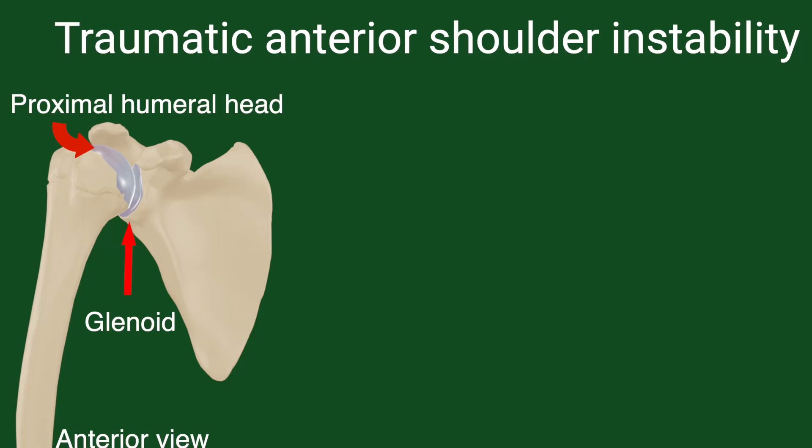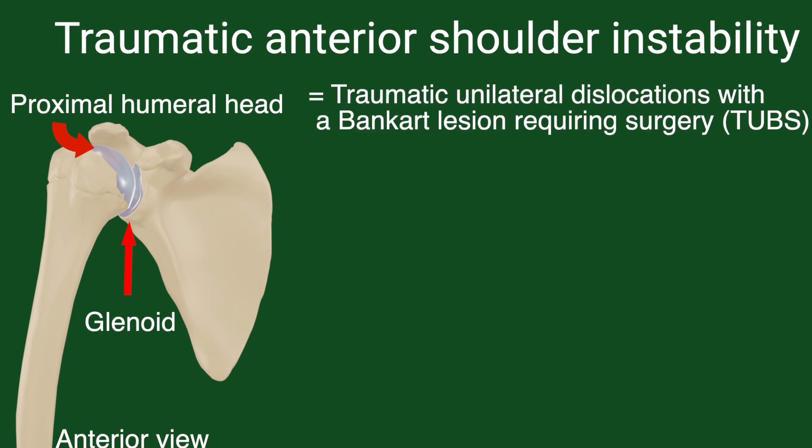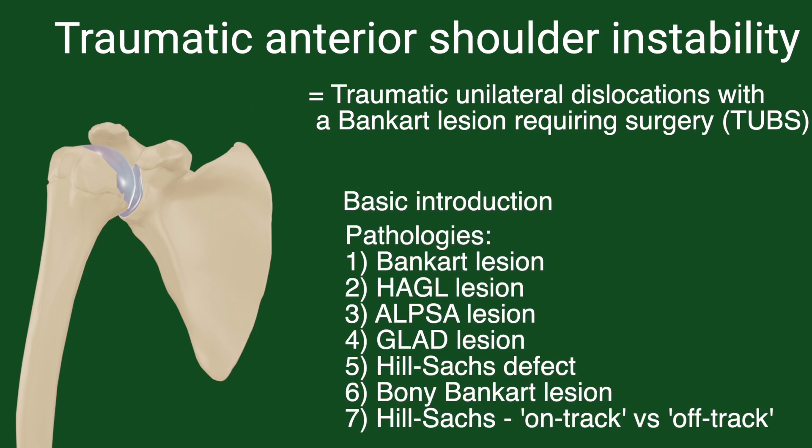This video aims to explain the pathologies relating to traumatic anterior shoulder instability, also known as traumatic unilateral dislocations with a Bankart lesion requiring surgery — TUBS in short. The primary goal of this video is to introduce the anatomy of such pathologies and does not explain the physical examination or imaging for the diagnosis of these pathologies.